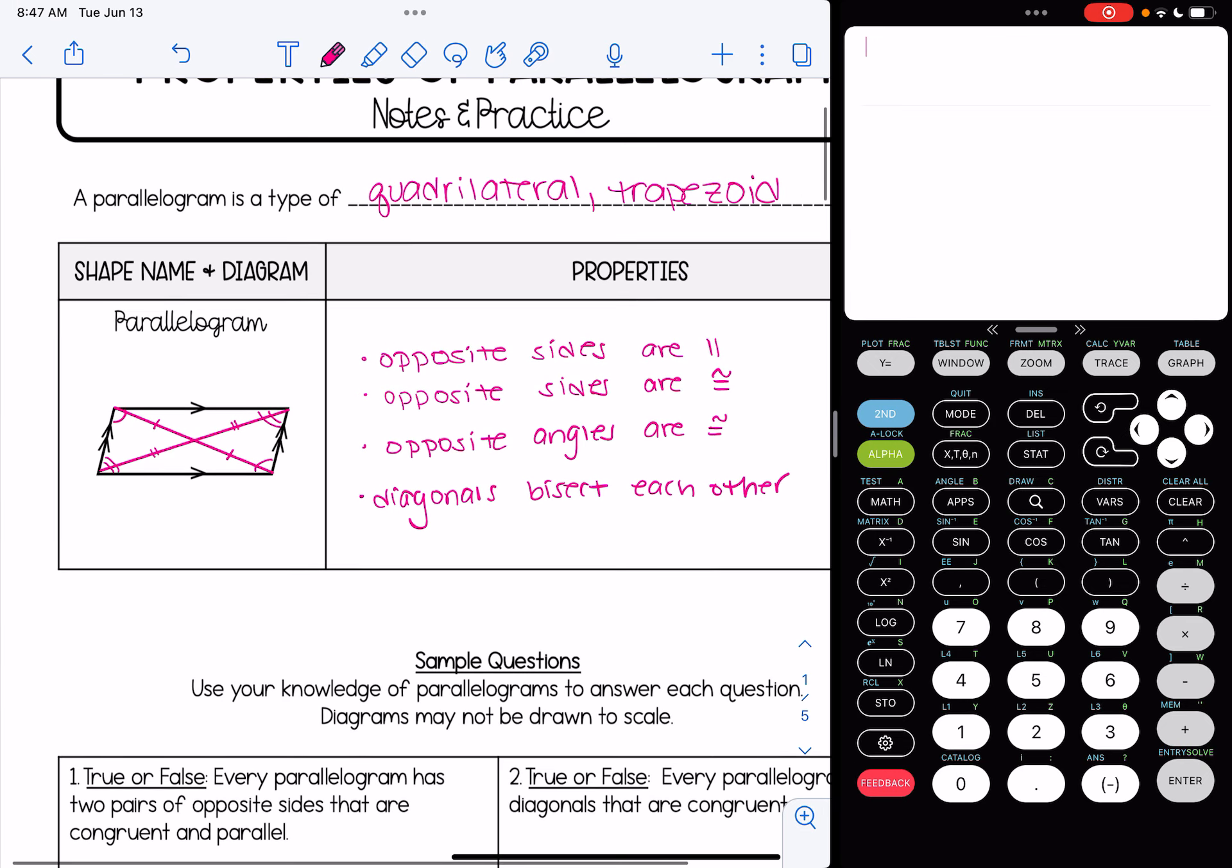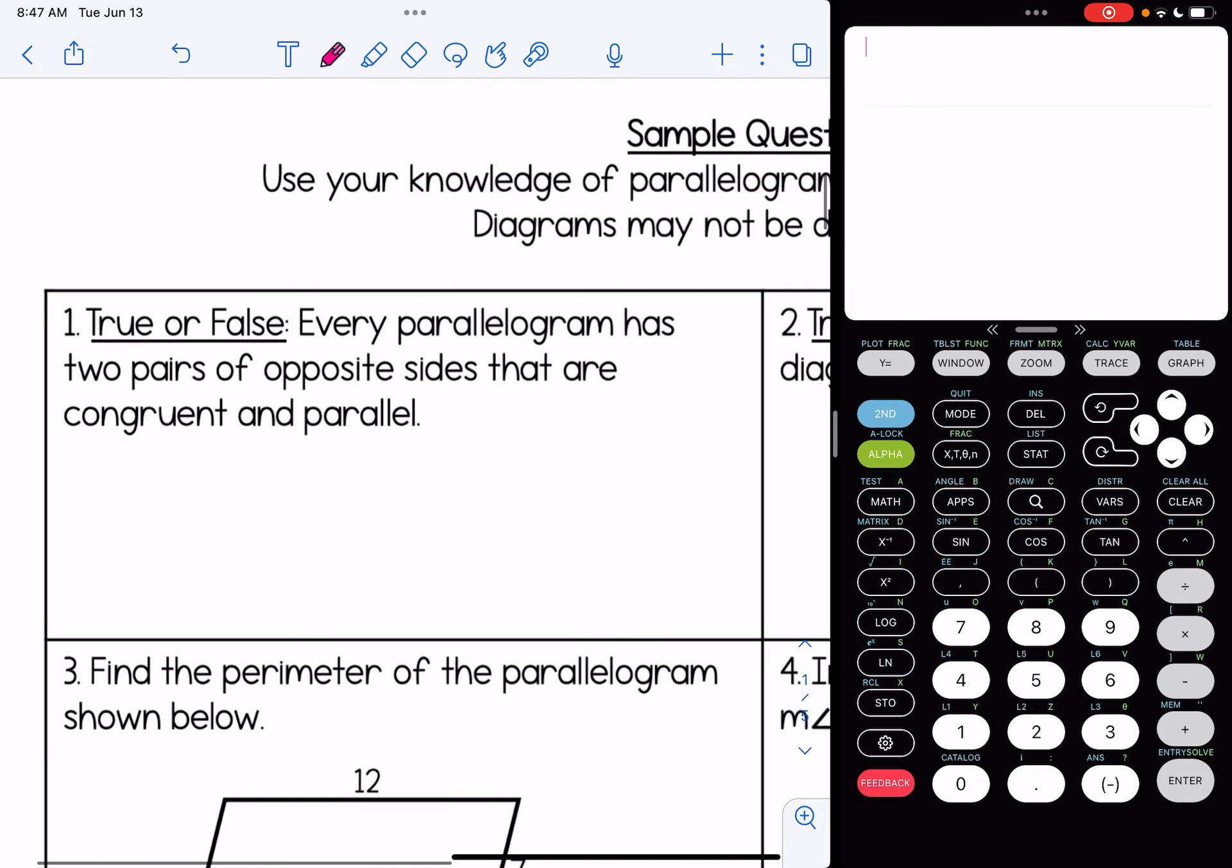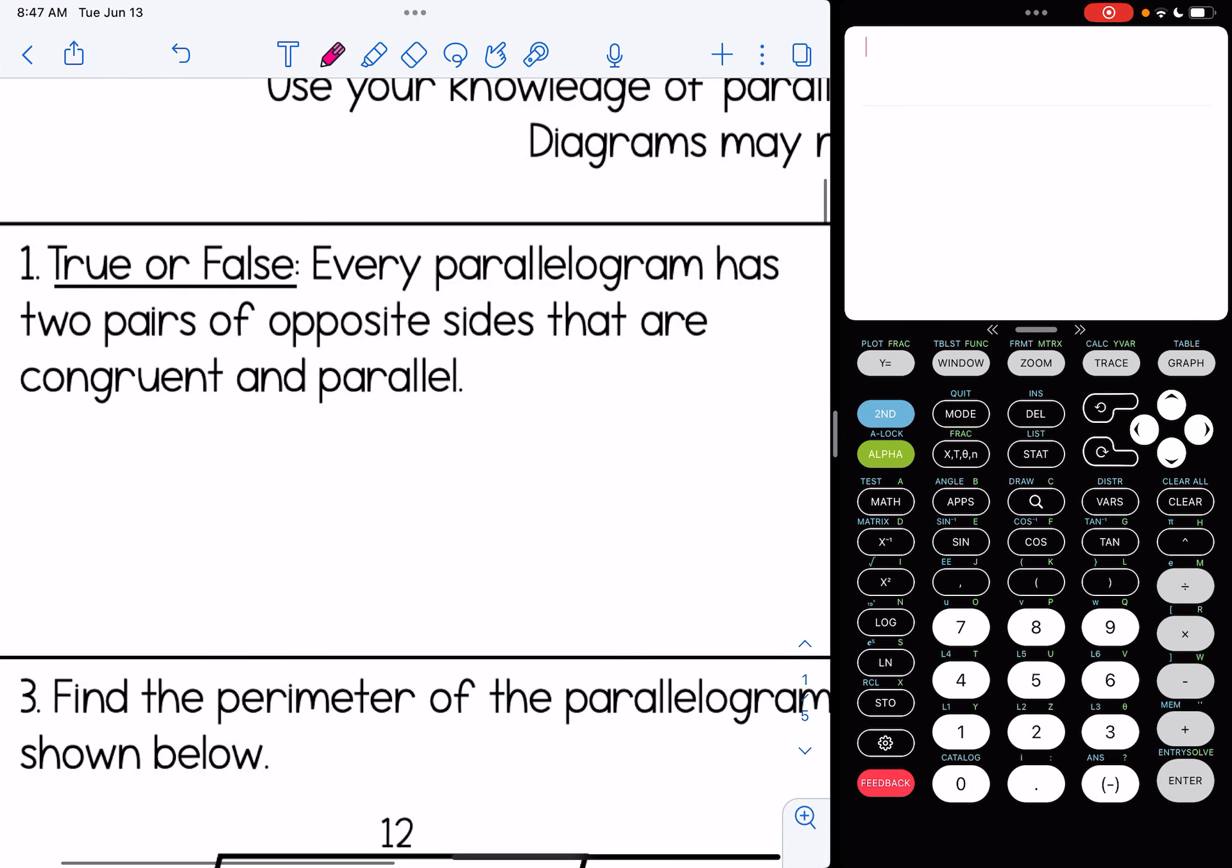So let's use all these properties to answer some questions on parallelograms. Number one, true or false, every parallelogram has two pairs of opposite sides that are congruent and parallel. That is true. That matches the properties we just talked about.